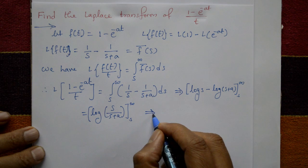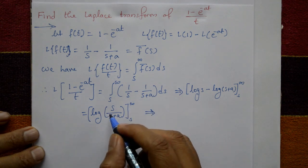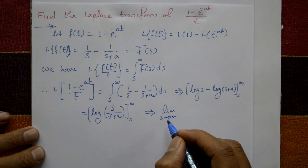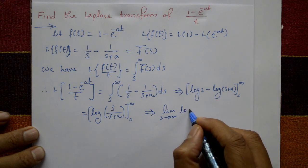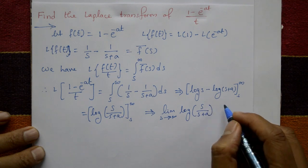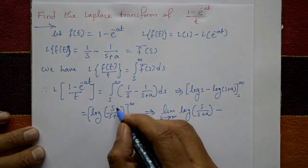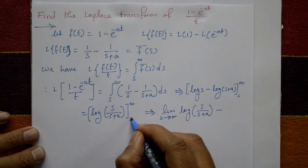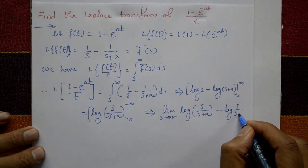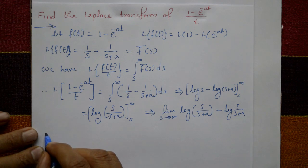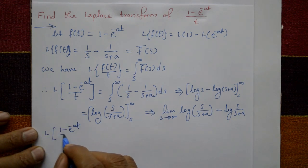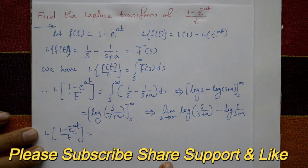Applying the limits: the upper limit has s tending to infinity giving log of s upon s plus a, minus the lower limit where s stays as s, giving log of s upon s plus a.